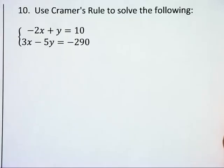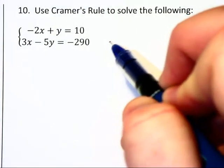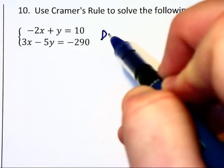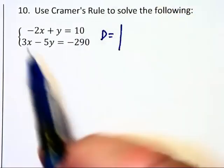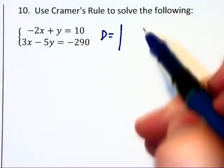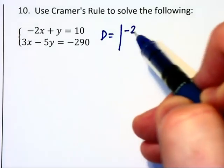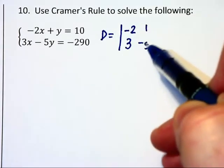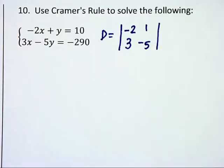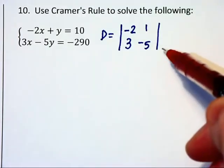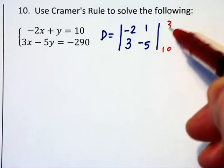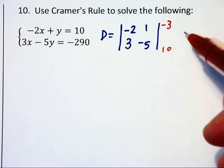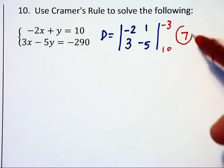Finally, we're being asked to solve using Cramer's rule, and we will need to find the value of determinant D. D will contain the coefficients to the left of the equal sign, so the first column is negative 2 and 3, the second column is 1 and negative 5. So evaluating this determinant, one diagonal is 10, the other diagonal is 3, but I change it to a negative 3, and so the value of D is 7.